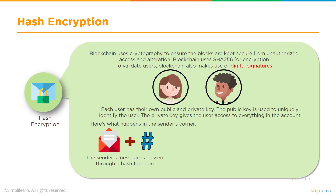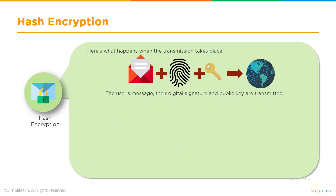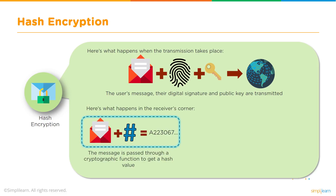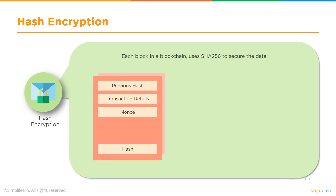In a typical sender-receiver transaction, when a sender wants to send a message, that message is passed through the SHA-256 hashing function. The output of that hashing function is then passed through a signature algorithm with the user's private key — this is how a digital signature is obtained. The message, the digital signature, and the public key are then transmitted on the public blockchain. At the receiver end, the message is passed again through the cryptographic function to get a hash value, which is compared with the hash output obtained by passing the digital signature and public key through a verification function. If both hash outputs match, the authenticity of the message is validated.